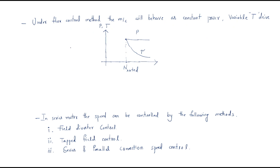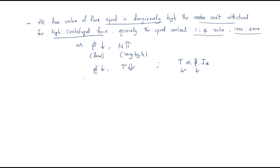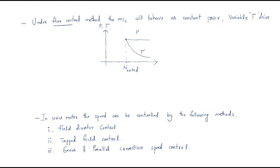Considering power: when flux decreases, speed increases and torque decreases. Both changes compensate together so power becomes constant. Under the flux control method, the machine behaves as a constant power and variable torque drive. On a speed versus power and torque graph — since this is above rated speed — power is constant and torque decreases with increasing speed.